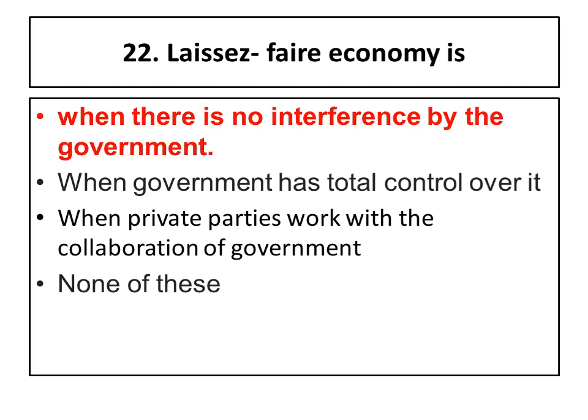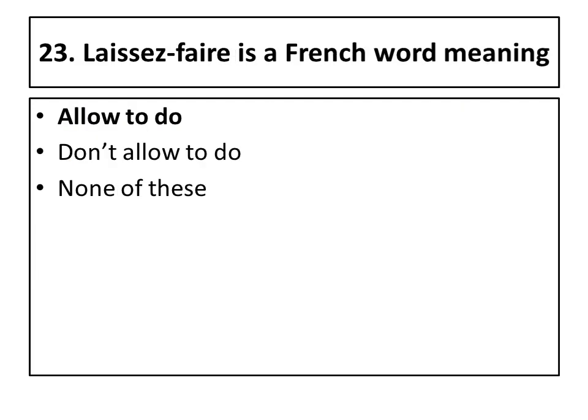Twenty-second question: laissez-faire economies exist when there is no interference by the government. This idea was given by the classical economists, who were against the role of government in the economy. Twenty-third question: the French word 'laissez-faire' means 'allow to do' — the right answer is 'allow to do', meaning that the government has no role over the economy and firms function independently.